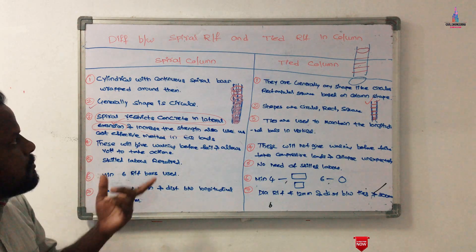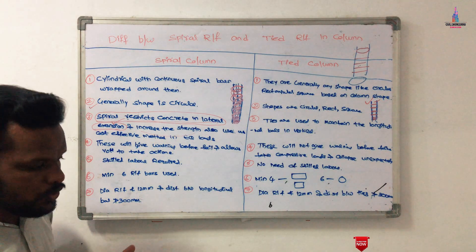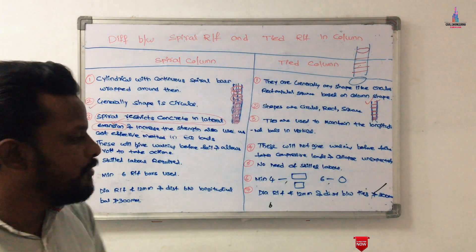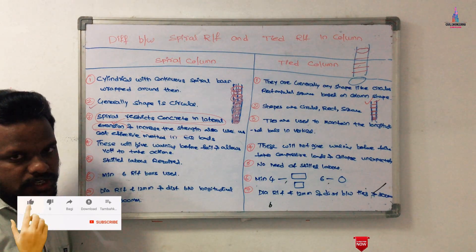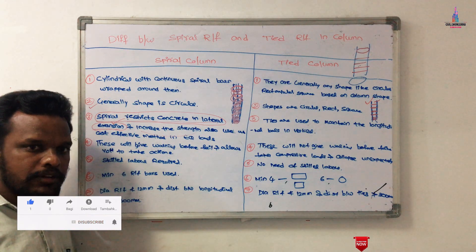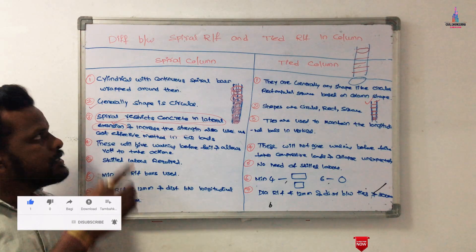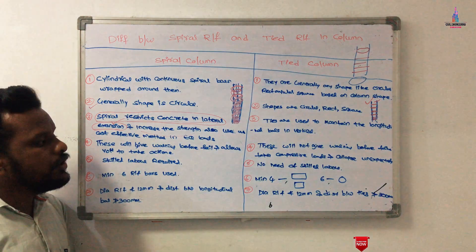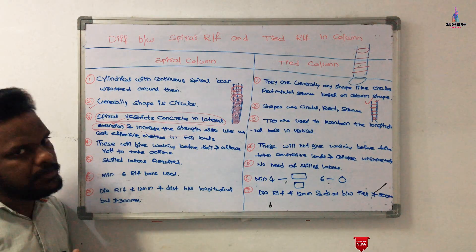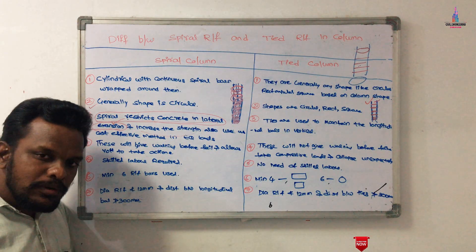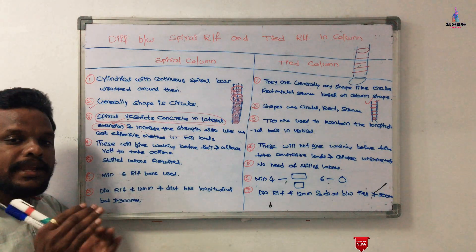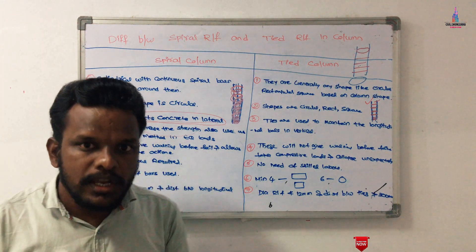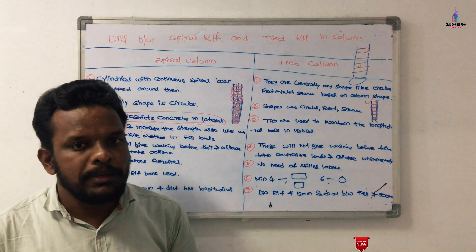A major advantage of spiral reinforcement columns is that when the ultimate load is applied, it gives a warning before failure — showing cracks or exposed reinforcement — so that necessary action can be taken. In contrast, tie reinforcement columns take only axial loading, and if the load exceeds the ultimate capacity, there is a chance of direct structural collapse without any warning. This is the major disadvantage of tie reinforcement.